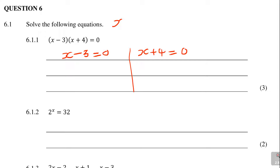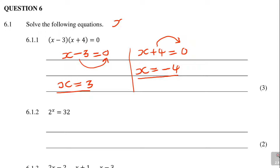It's already done for you. Then you take minus 3 to the other side — you get x equals positive 3. On the other side, take positive 4 to the other side — you get x equals negative 4. You can test your answers: if x is 3, put 3 in both brackets and it gives you 0. Or put minus 4 in both — don't mix them — and it also gives you 0. Use your calculator to verify.